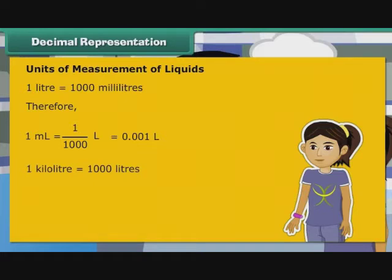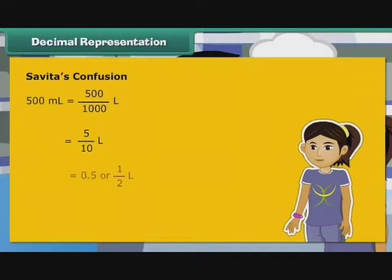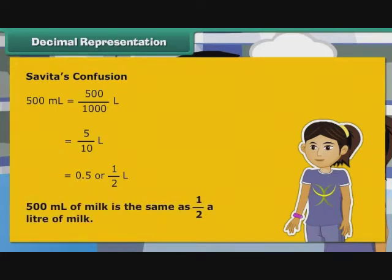1 kilolitre is equal to 1000 litres. Therefore, 1 litre is equal to 1 by 1000 kilolitre, that is equal to 0.001 kilolitre. Now, we revisit Savita's confusion. 500 ml is equal to 500 by 1000 litre, that is equal to 5 by 10 litre, that is equal to 0.5 or 1 by 2 litre. So 500 ml of milk is the same as half a litre of milk. Savita is now relieved.